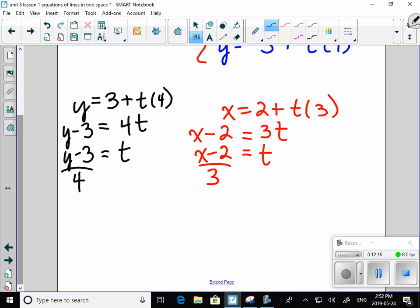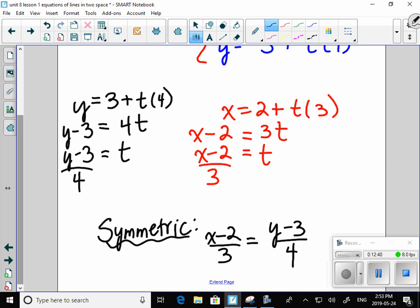And also, t equals x subtract 2 over 3. So I've got my last type of equation. It's called symmetric. And that's where I have, in this specific case, x subtract 2 over 3 equals y subtract 3 over 4. There are three types of equations. And I would like to organize those for you in general form. So you remember what they all look like.